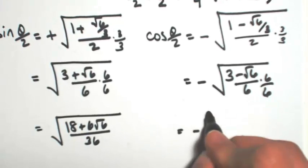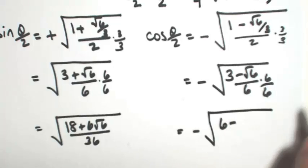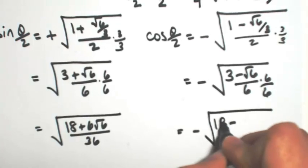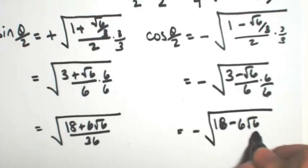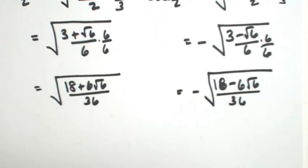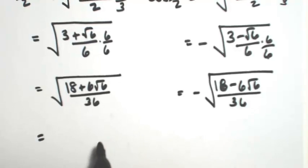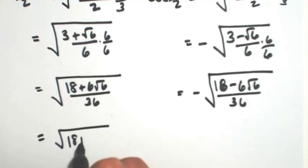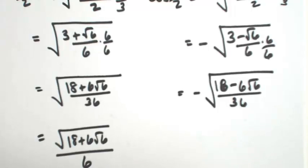For the cosine, we're going to have our negative. And then 6 minus, which is our 18 minus, 6 square root of 6 over 36. One more step, square root of the top and bottom. So we're going to have the square root of 18 plus 6 square root of 6 all over 6.